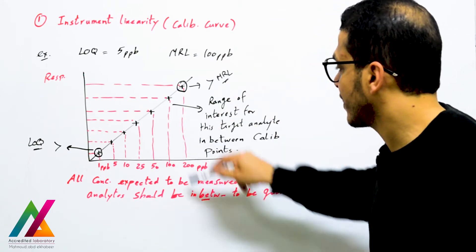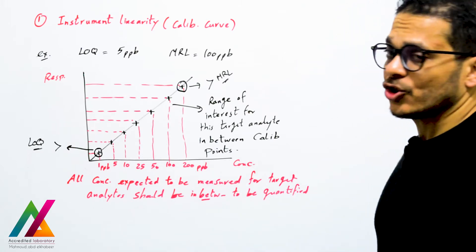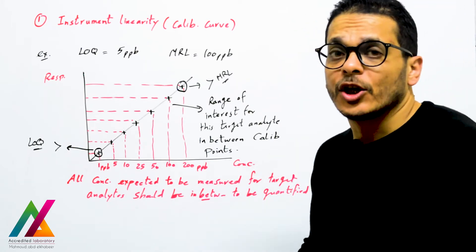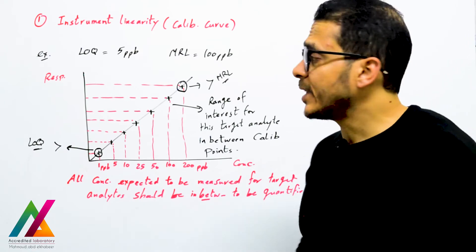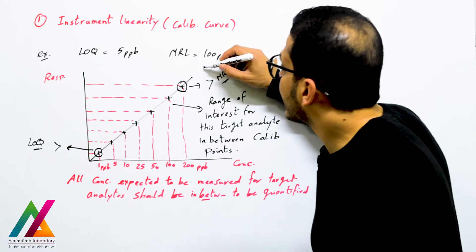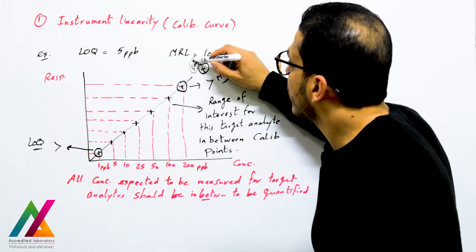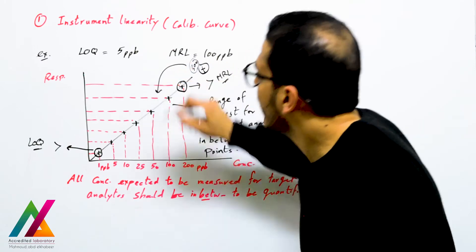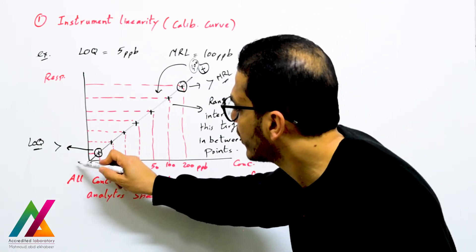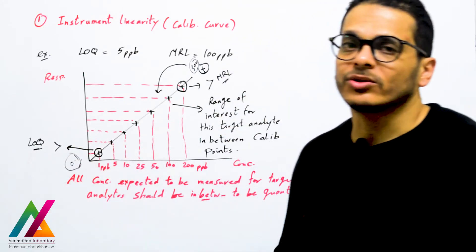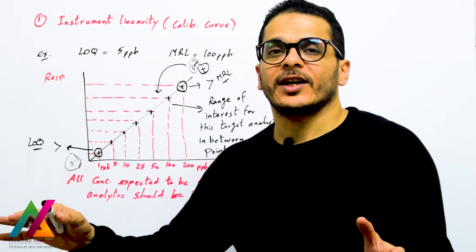All concentrations expected to be measured for this target analyte should be between your calibration points for high accuracy quantification. If you get a result higher than the last calibration point — for example 300 ppb — you must dilute the sample so the result falls within calibration range. If a result is below the first calibration point, such as 0.1 ppb, it will be reported as not detected.